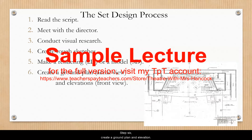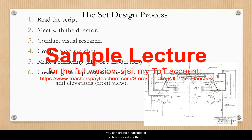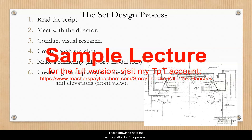Step six: create a ground plan and elevations. Once your rendering or model is approved, you can create a package of technical drawings that include the ground plan, which is a view from above, and the elevations, which is a view of each piece of scenery from the front. These drawings help the technical director — the person in charge of building your scenery — communicate with the carpenters and other fabricators.